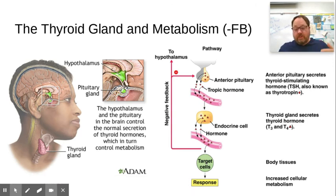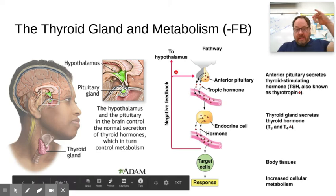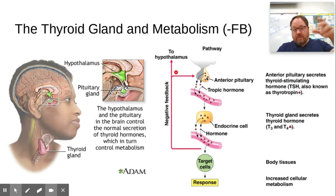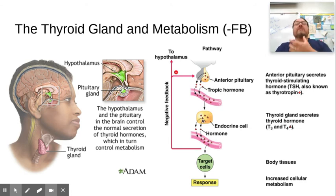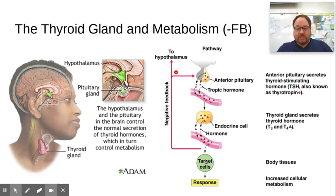What T3 and T4 do is up-regulate cellular metabolism — they crank up the rate of chemical reactions, and one byproduct of chemical reactions is heat, so it warms the body. To summarize: the hypothalamus releases thyrotropin-releasing hormone to the pituitary; the pituitary releases thyrotropin (TSH); that goes to the thyroid, which releases T3 and T4; and those hormones dock on receptors in cells around the body, ramping up metabolism and warming you.